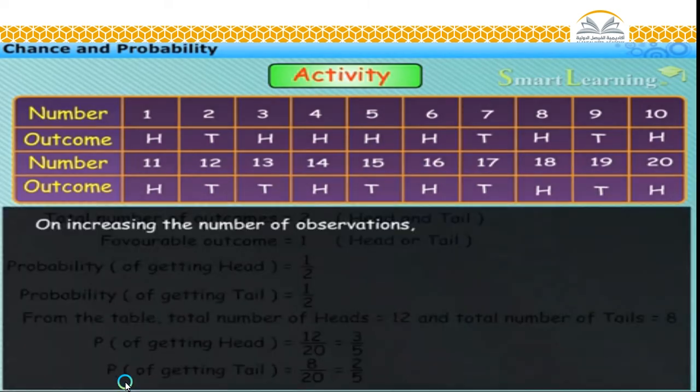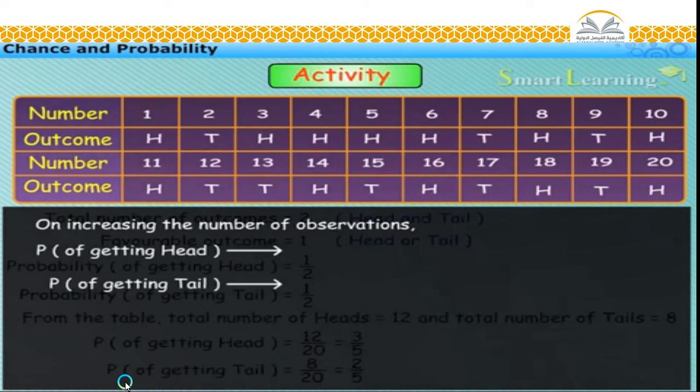If we increase the number of observations, we find that the probability of each event approaches to one upon two.